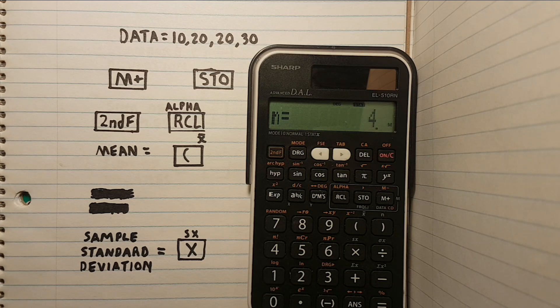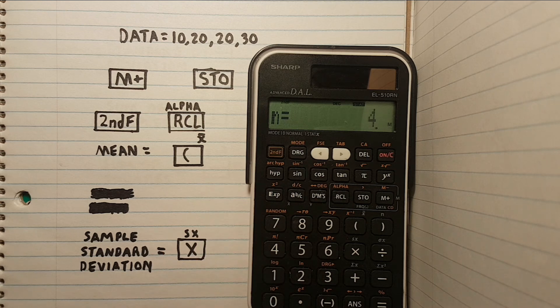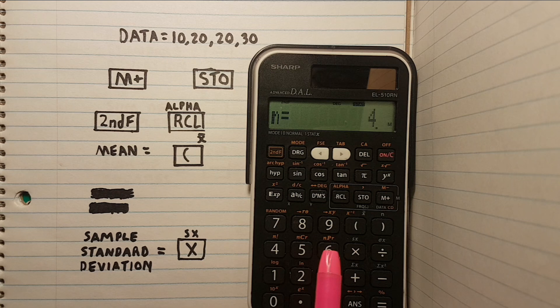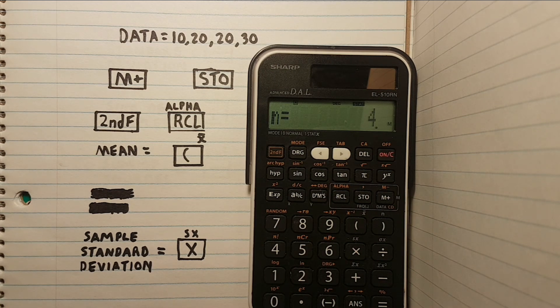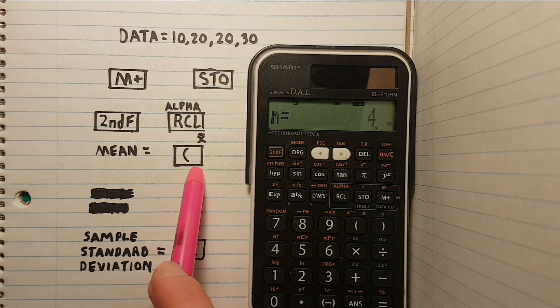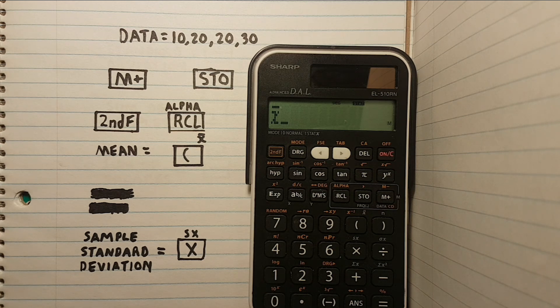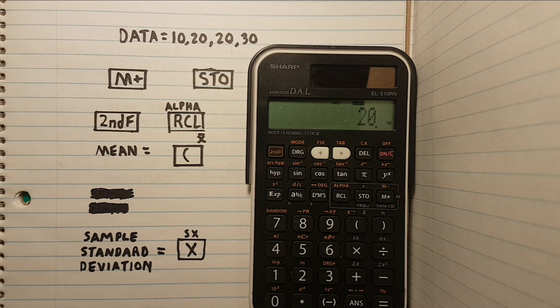Okay, now if we wanted to find the mean of this data set, we would press the second function and the RCL key to activate alpha mode. Then the left bracket with the X bar on top, which represents mean. We now see the X bar appear on the screen. Press the equals key and we get the number 20, which is the mean or average of our data set.